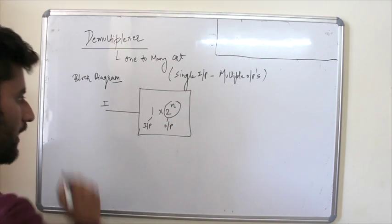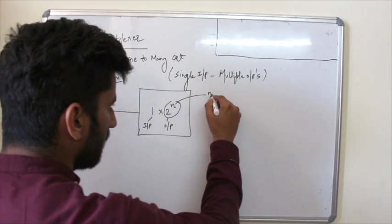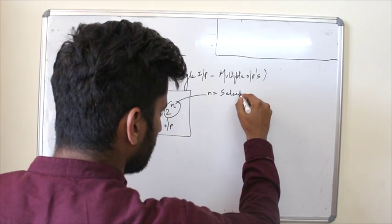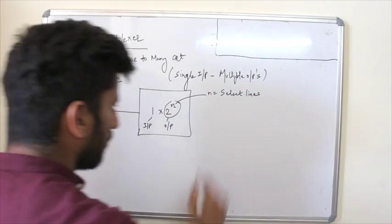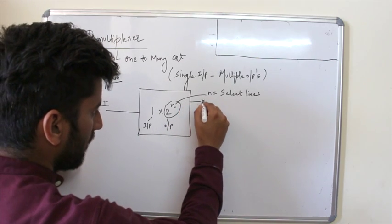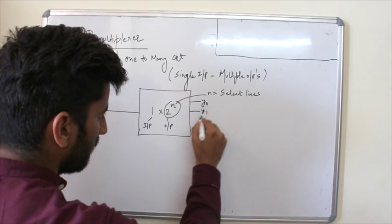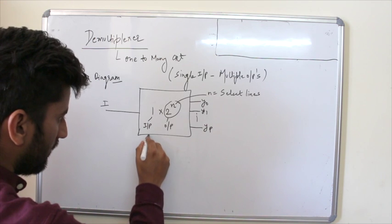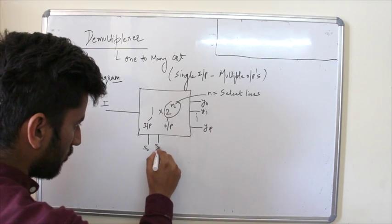Okay, so we have single input. Let's say I. This n is representing what? Select lines. Okay, so let's say outputs are starting with y0, y1 up to yp.